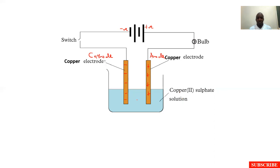That means the ions present in the solution must come from this substance. So we have copper ions present in solution together with our sulfate ions. But because this is an aqueous solution, we shall also have hydrogen ions from the water together with hydroxide ions from the water. Remember, it is the copper(II) ions that make the copper(II) sulfate solution appear blue.